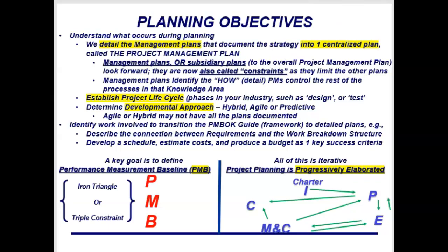The planning objective is to detail the management plans — to develop a single centralized plan that we can control. This plan is called management plans, also known as subsidiary plans, because these are sub-plans to the overall project management plan, which you are responsible for. On page 25, process 4.2 — develop project management plan — is in integration management. These subsidiary plans then become constraints on each other; I can't have more scope than I have budget to develop.